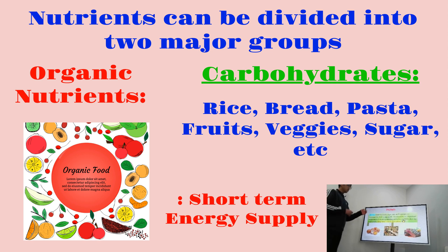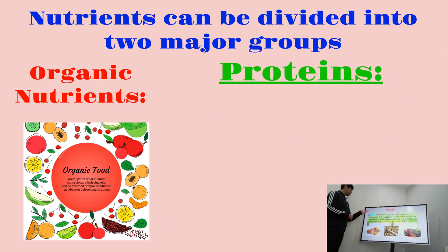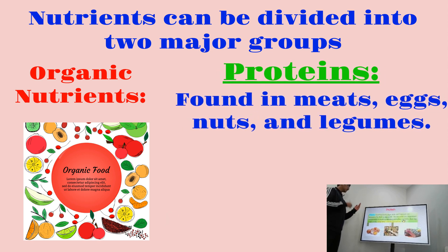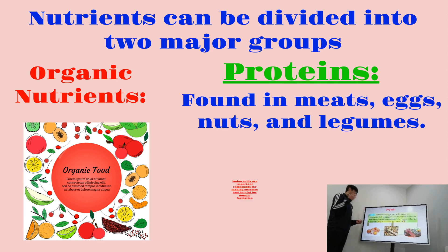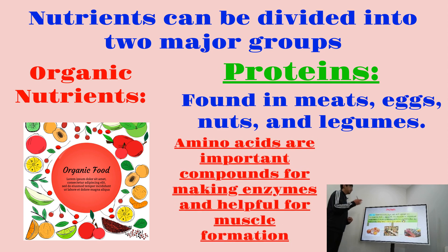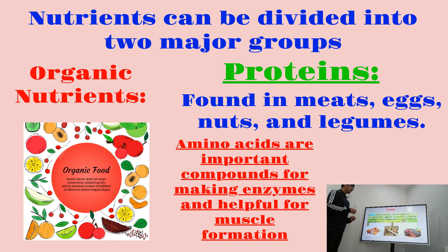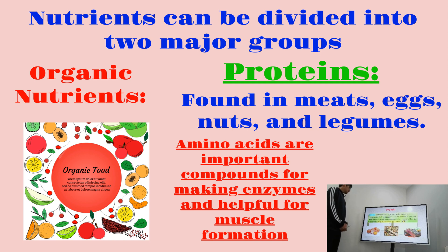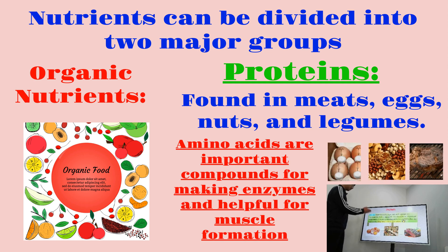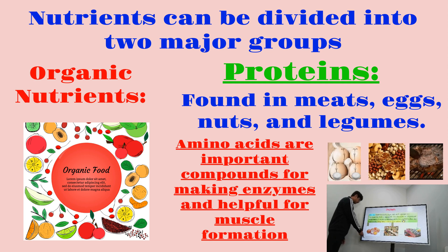Now let's cover proteins. Proteins found in meats, eggs, nuts, and legumes are necessary for their amino acids. Amino acids are important compounds for making enzymes and other proteins that the body needs. In summary, proteins are helpful for muscle formation. Sources include eggs, nuts, and meat.